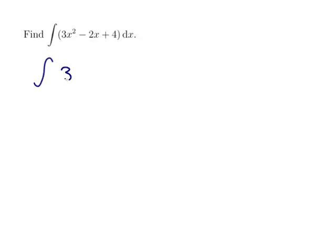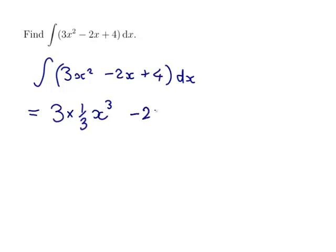The integral of 3x² - 2x + 4 dx. Well, that 3 is going to stay there because it's multiplied on. And with the x², the power goes up by 1 and we divide by the new power. Minus 2 is going to stay there. x is x to the 1, so we'll put the power up by 1 and divide by the new power.